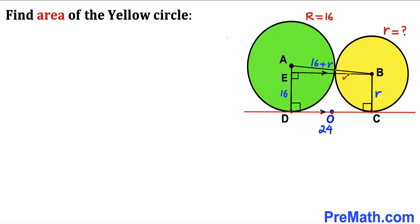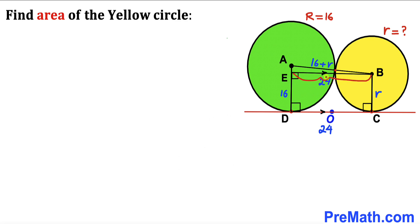I have drawn perpendicular EB parallel to line DC. In rectangle EBCD, side DC equals side EB, so EB = 24. The full length from A is 16, and since the yellow circle's radius is r, the small segment AE = 16 − r.